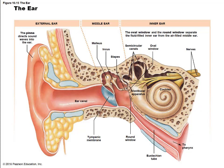The stapes, incus, and malleus have vibrated and conducted the frequency of the sound wave through the oval window. This vibration travels through the cochlea, where it is captured by the bending of the hair cells. The information is then picked up by the cochlear nerve, which exits along with the vestibular nerve. The vestibular nerves innervate the semicircular canals, which are responsible for rotation and balance.